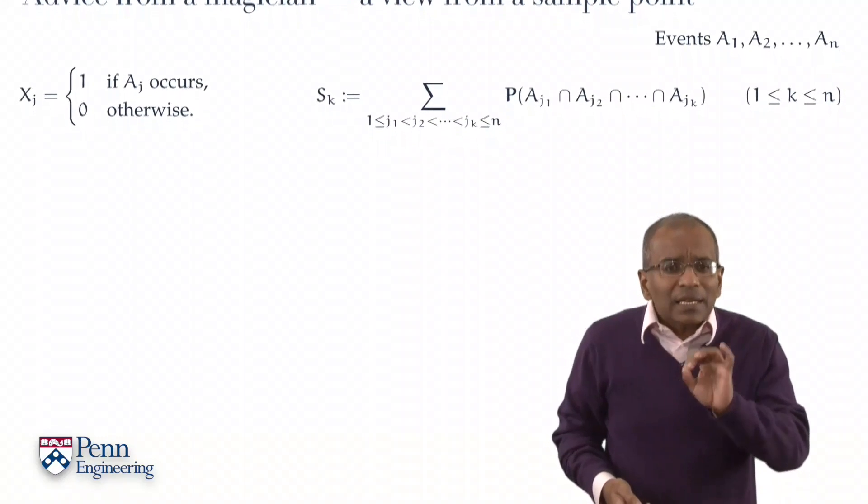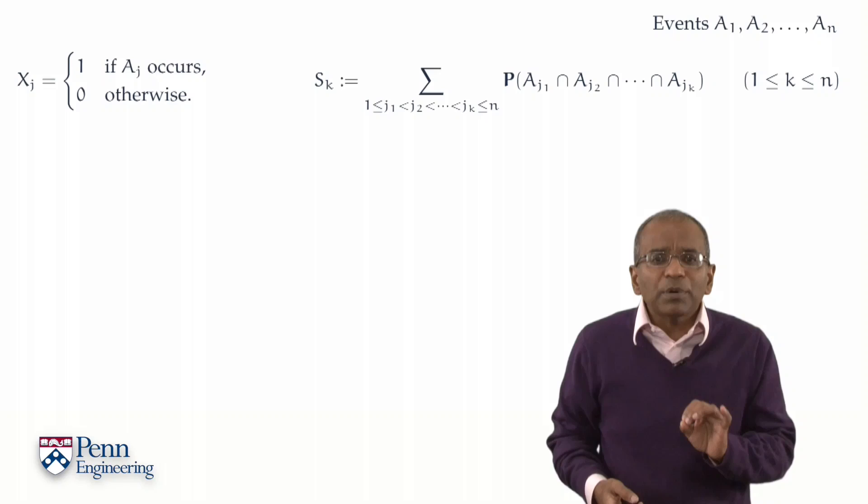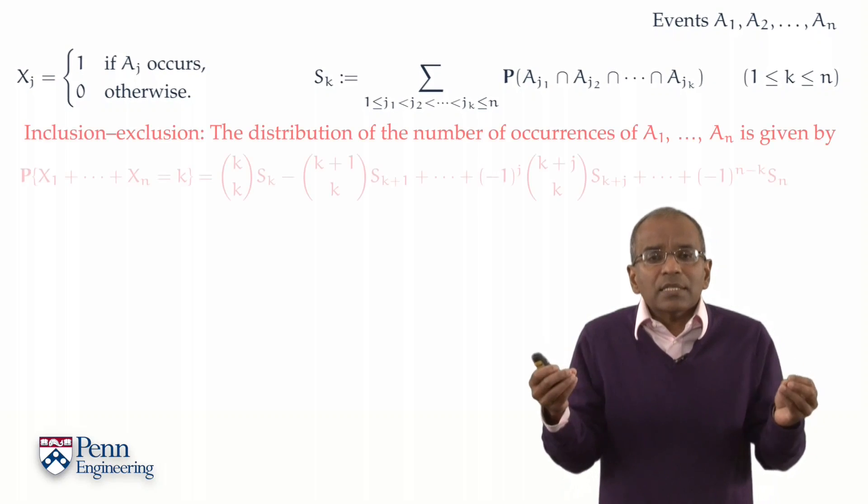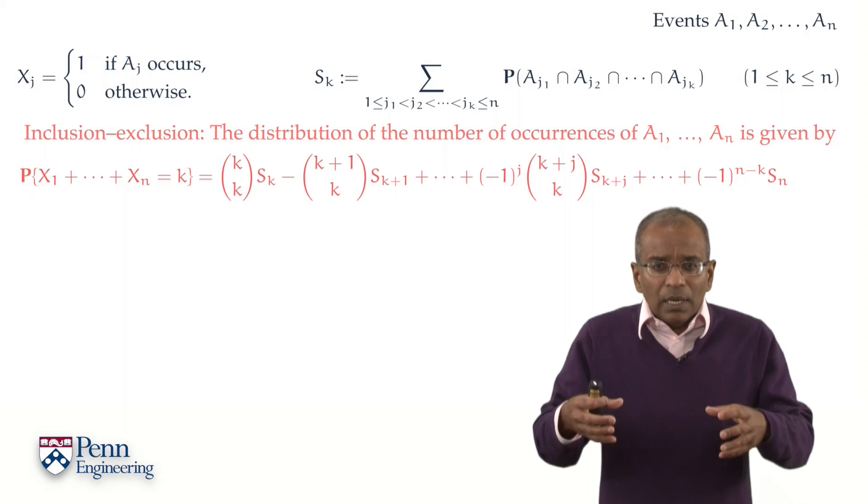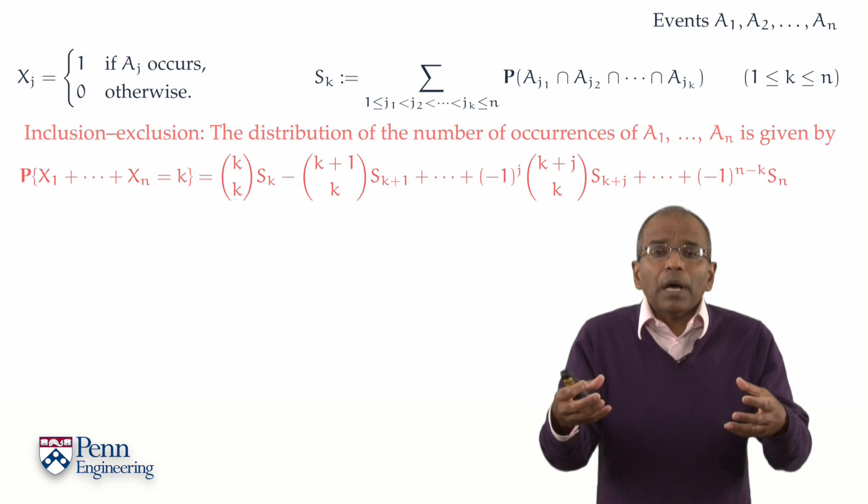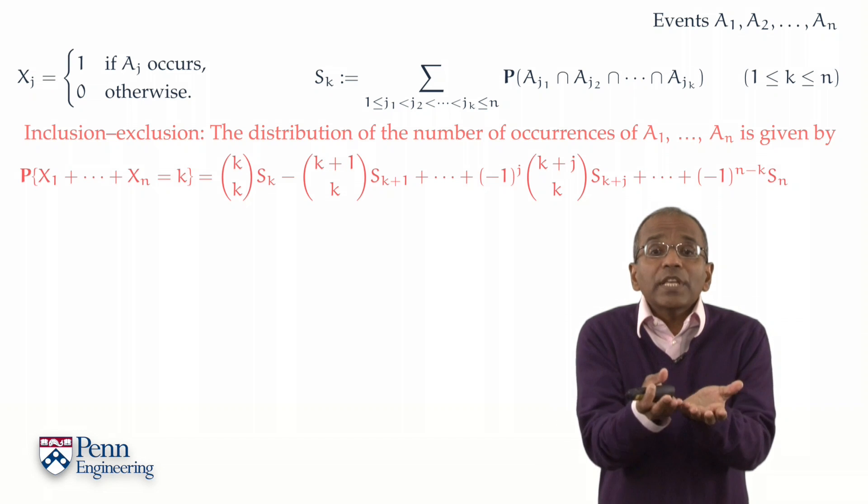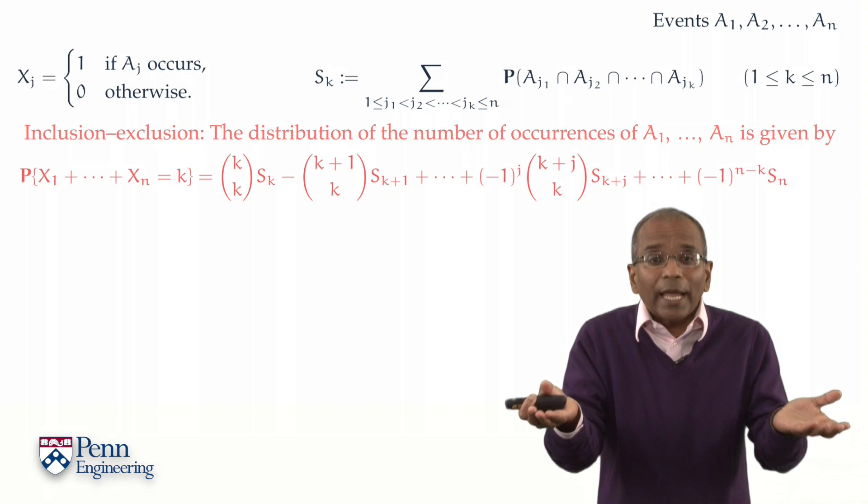With this in place, here is the generic principle of inclusion and exclusion. The principle says something about the number of occurrences of these underlying events A1 through An.